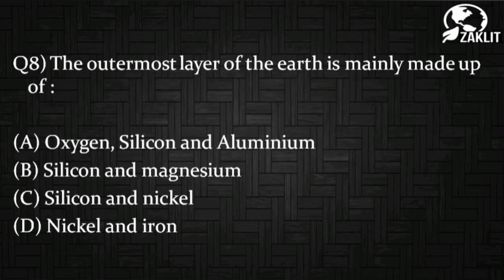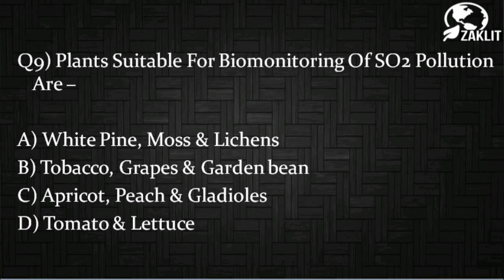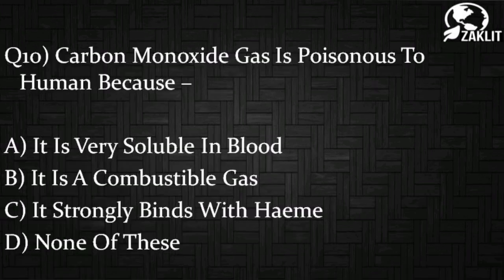Question number eight: the outermost layer of the Earth is mainly made up of which of the following elements? Question number nine: plants suitable for biomonitoring of sulfur dioxide pollution are? Moving to the tenth question: carbon monoxide gas is poisonous to humans because of?